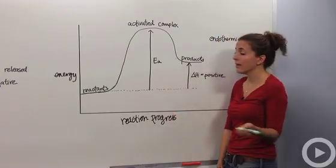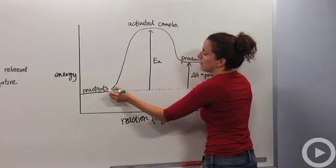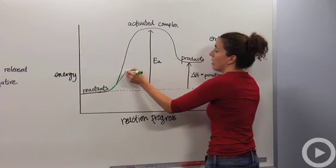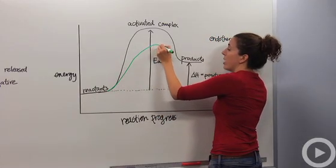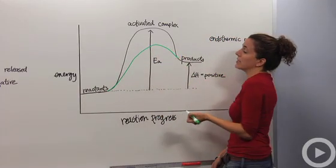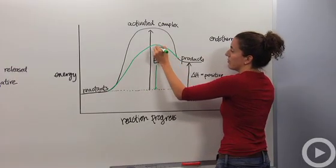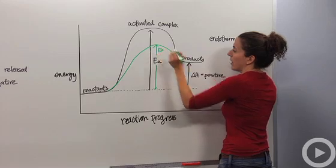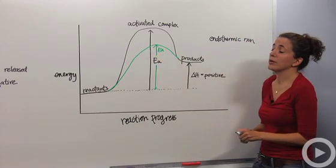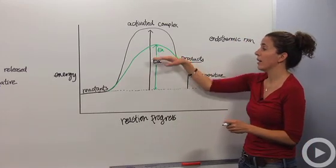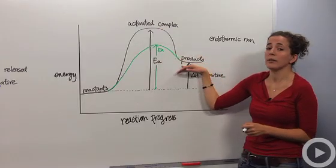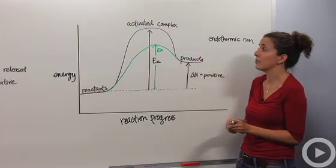If we were to add a catalyst here to increase the reaction rate, the pathway would be lowered, still higher than the products, but lowered. And our activation energy would be from here. That would be our new activation energy, Ea. So catalysts would increase the rate of this reaction also, but the activated complex would not be lower in energy than the products. It would always be higher, because it's less stable.